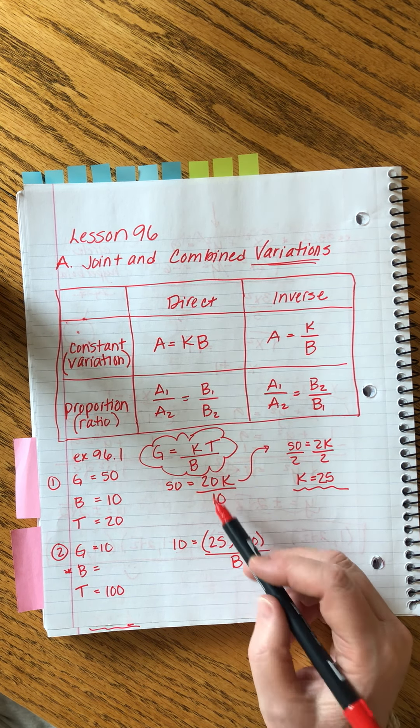Simplifying, 50 equals 2k, so k equals 25. That's our constant — I'll put a cloud around that. Now solving is straightforward.